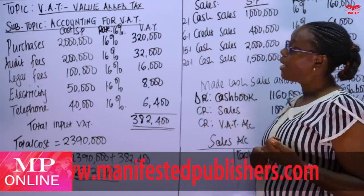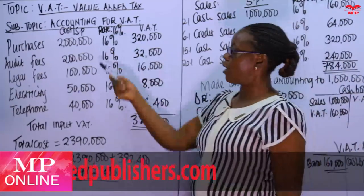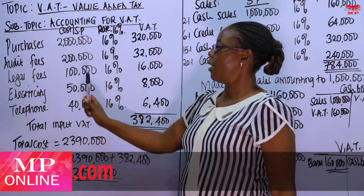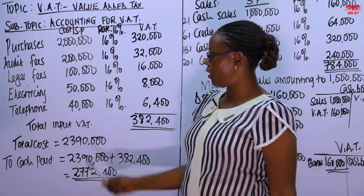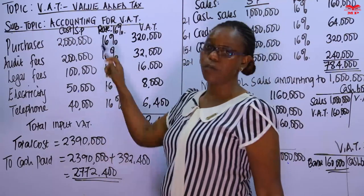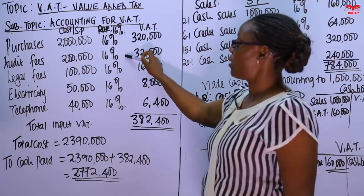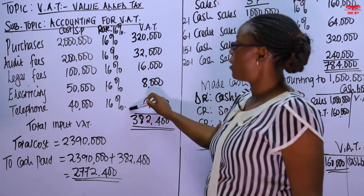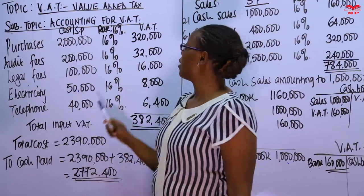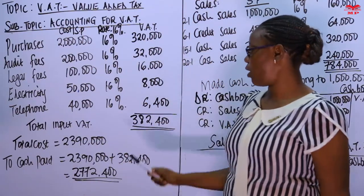We had a business, XYZ, and these were the purchases for that business. They made purchases, paid auditors and legal fees, electricity, and telephone. Since these transactions were exclusive of VAT, we computed VAT at 16% in each case. The total VAT on purchases came to $382,400.